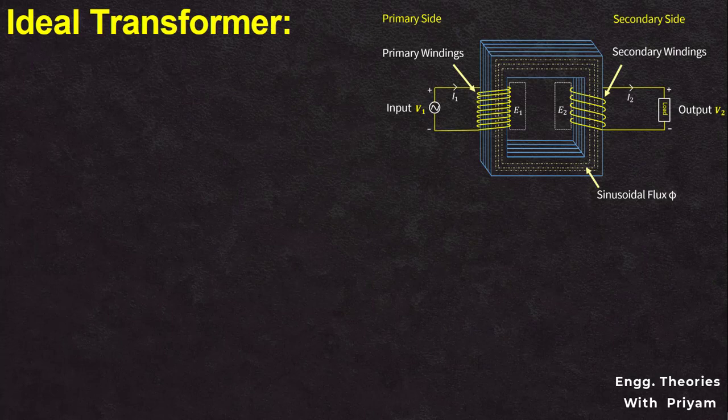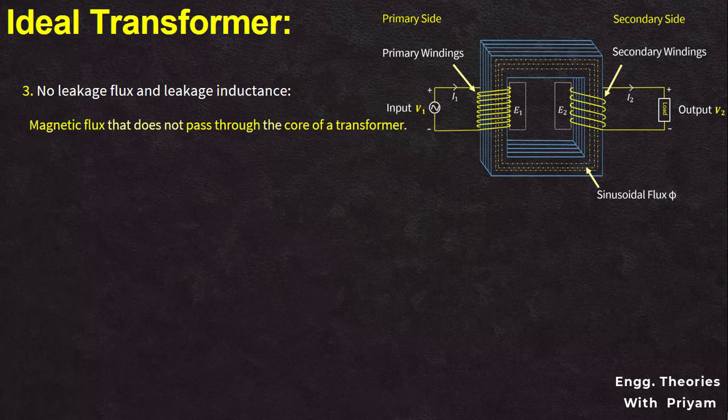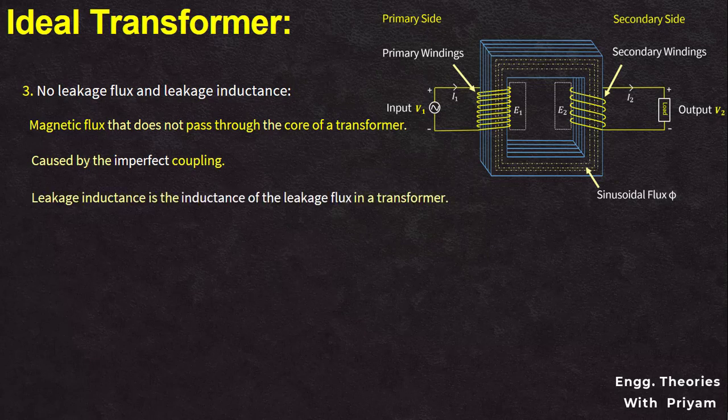Another characteristic of the ideal transformer is no leakage flux and no leakage inductance. Leakage flux is the magnetic flux that does not pass through the core, caused by imperfect coupling between the primary and secondary windings. Leakage inductance is the inductance associated with that leakage flux. In an ideal transformer, there is no leakage flux or leakage inductance, meaning all magnetic flux produced by the primary winding is fully coupled to the secondary winding.